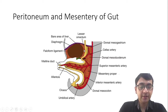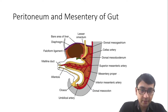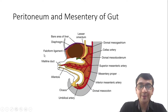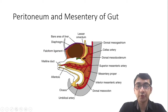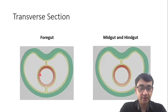In addition to the dorsal mesentery throughout the gut, there is an additional ventral mesentery in the case of the stomach and the lower part of the abdominal esophagus, known as the ventral mesentery. The ventral mesentery develops the liver within it, and after the development of the liver it is divided into two parts: the part between the stomach and the liver is the lesser omentum, and the part between the liver and the anterior abdominal wall is the falciform ligament.